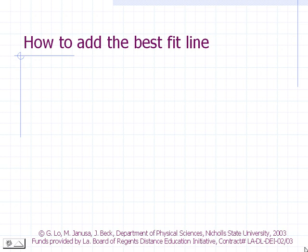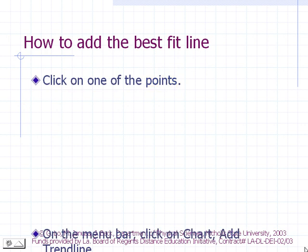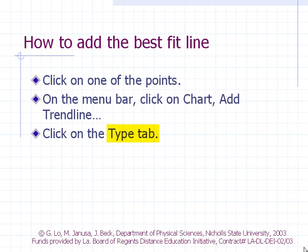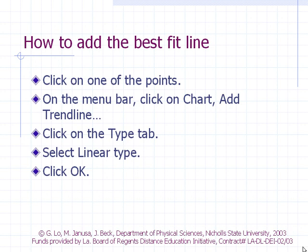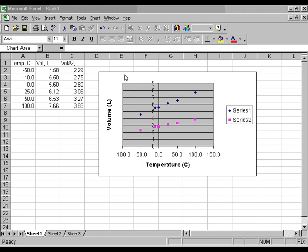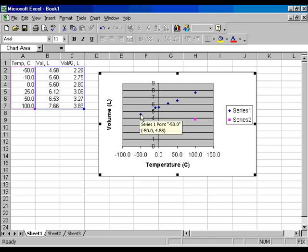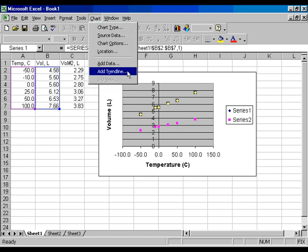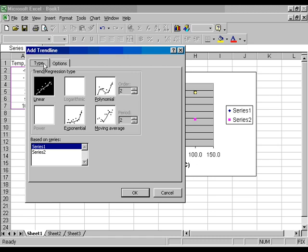How to add the best fit line: Click on one of the points on the chart. On the menu bar, click Chart, then Add Trendline. Click on the Type tab, select Linear type, then click OK.